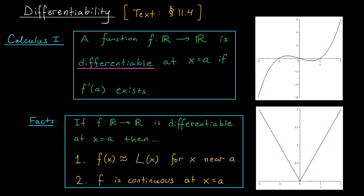Let me first remind you what it meant for a function in Calculus 1 to be differentiable. We said that a function f from R to R, which takes in one input and spits out one output, was differentiable at some point x equals a if you could calculate its derivative — if f prime of a existed. What this means informally is that the graph of our function at x equals a is very nice and smooth. We don't have any sharp cusps, we don't have any breaks. It's a nice smooth curve, and we can calculate a derivative there.